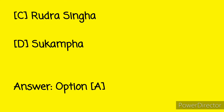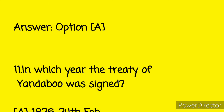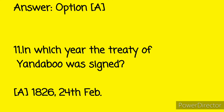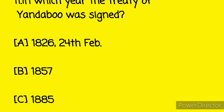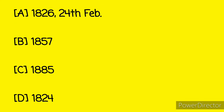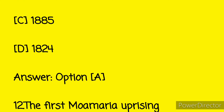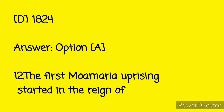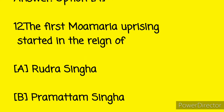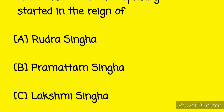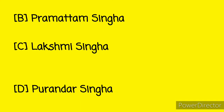And here the answer is Option A. Next question: in which year was the Treaty of Yandabu signed? Option A: 1826, 24th February, Option B: 1857, Option C: 1885, and Option D: 1824. Question number twelve: the first mint for coinage started in the reign of Option A: Rudra Singha, Option B: Pramatta Singha, Option C: Lakshmi Singha, and Option D: Puranda Singha.